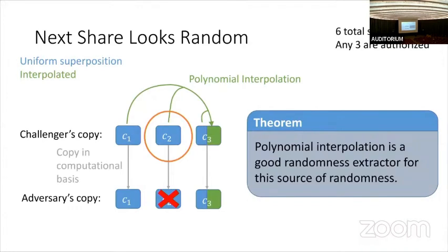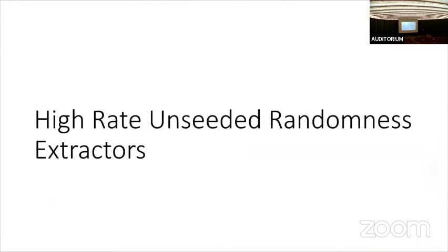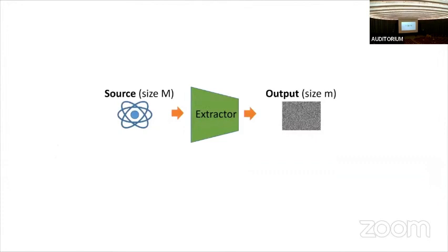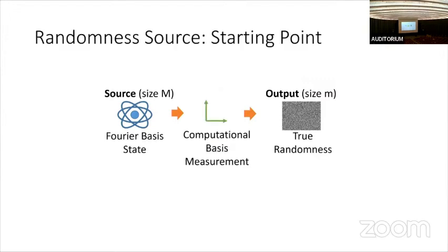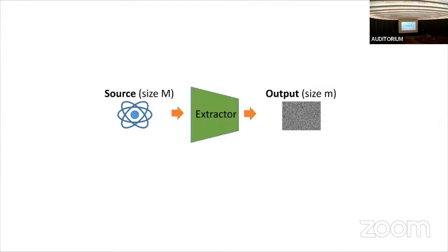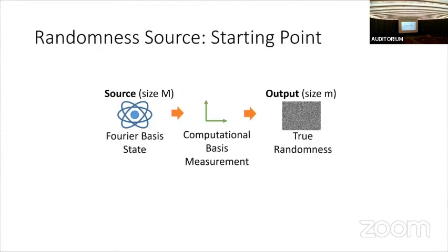Now let's talk about our final contribution: a high-rate unseeded randomness extractor. We have some quantum entropy source which we run through the extractor and hopefully get some truly random output, where the input size and output size can be different. If the source were a Fourier basis element, we could just measure it in the computational basis and get true randomness easily.